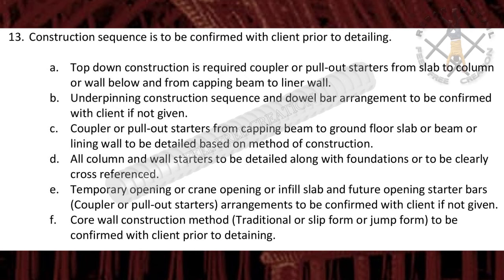Couplers or pull-out starters from capping beam to ground floor slab, beam, or lining wall to be detailed based on method of construction. All column and wall starters to be detailed along with foundations or to be clearly cross-referenced. Temporary opening, crane opening, infill slab, and future opening starter bar, coupler or pull-out starter arrangements to be confirmed with client if not given.